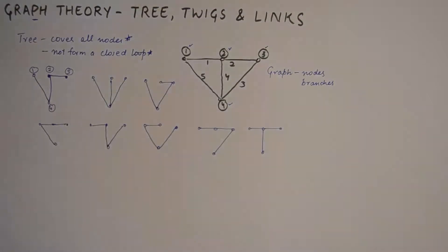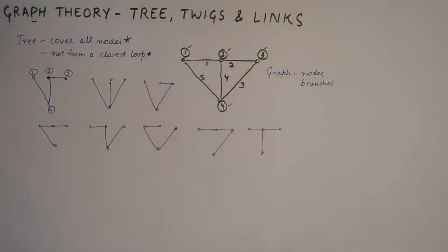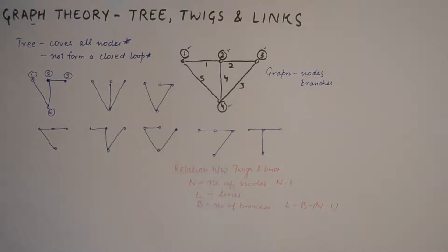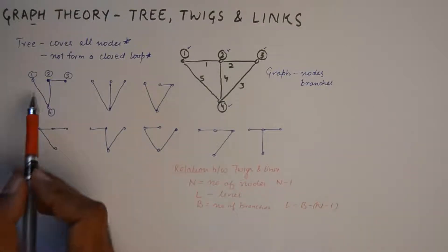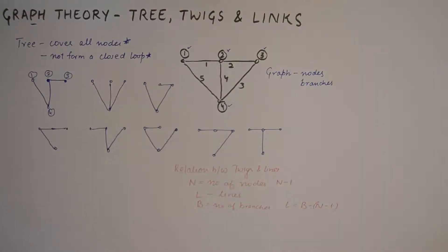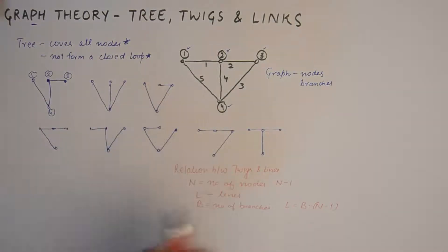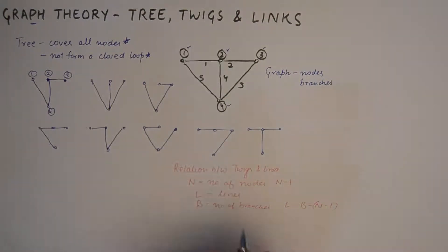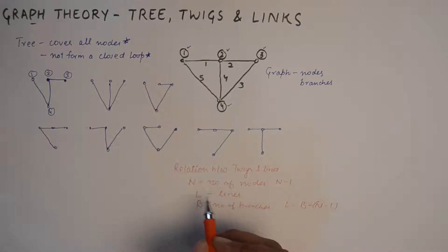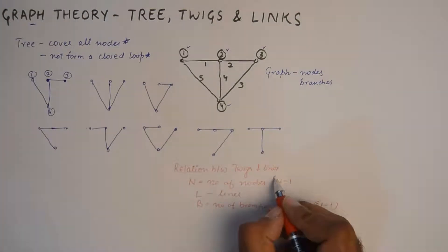Now if we talk about the definition of a twig — once we have formulated all the trees out of the graph, we need to find out what twigs are and what links are. All the interconnections used for making a tree will result in twigs. All the bold lines that we see here are twigs. You can see there are three twigs in each tree. There is a very famous relation: if the number of nodes is n, then twigs will be n minus one.